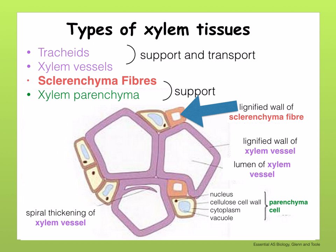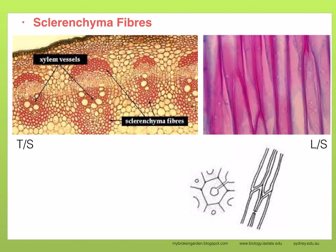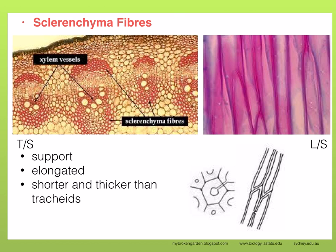Let's have a look at sclerenchyma fibres. Here you can see two images with the sclerenchyma fibres — notice how they are located next to the xylem vessels. They help to support the plant. These are elongated sclerenchyma cells with walls thickened with lignin. They are shorter and thicker than tracheids, have thick lignin walls, no living content, and their function is support only.